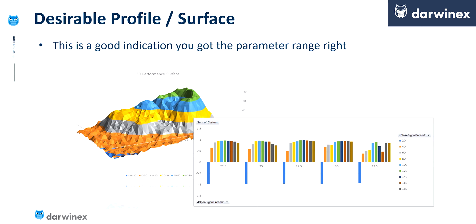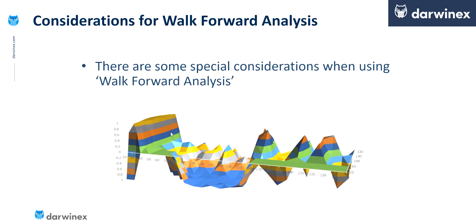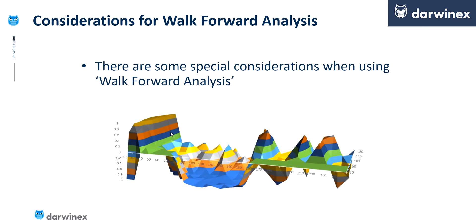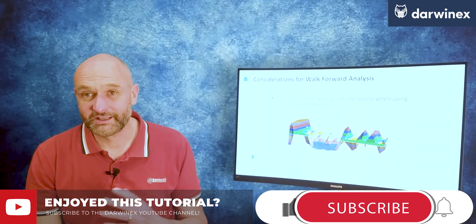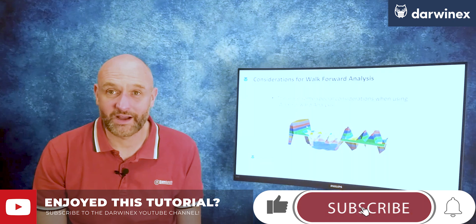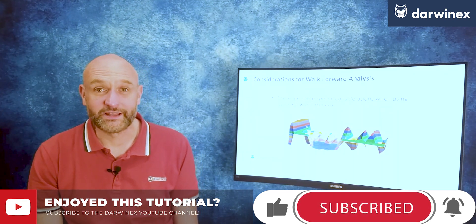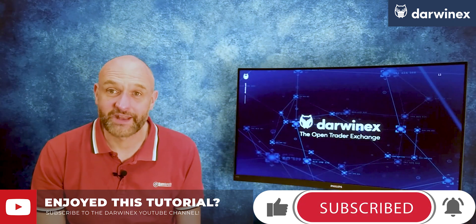In the last episode I spoke about a technique called walk-forward analysis or walk-forward optimization. The practice of choosing a sensible range is even more important when using this technique. Extend your parameter values beyond what is sensible here and you will genuinely end up in all sorts of problems. I'm going to go into a little bit more detail now about why that is, so click top right to go to the next part.